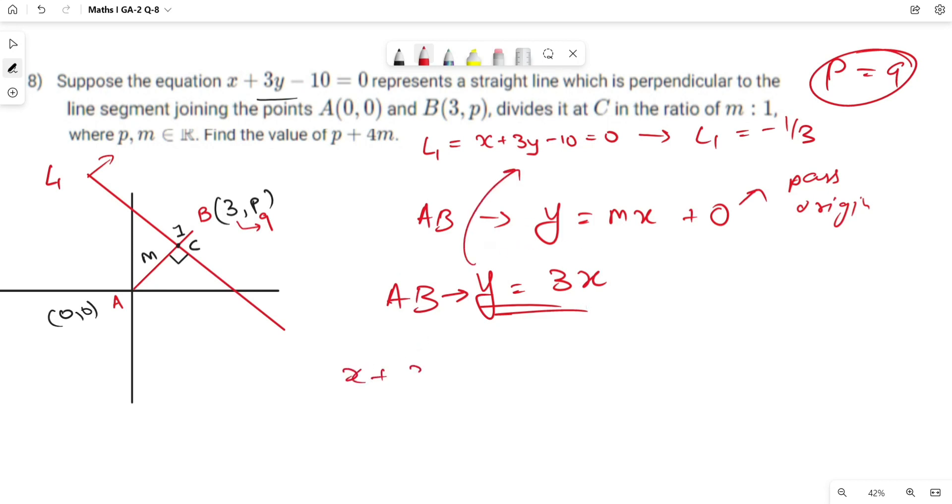Substituting into the line equation: x plus 3(3x) equals 10, which implies 10x equals 10, so x equals 1 and y equals 3. So C coordinates are 1 comma 3.